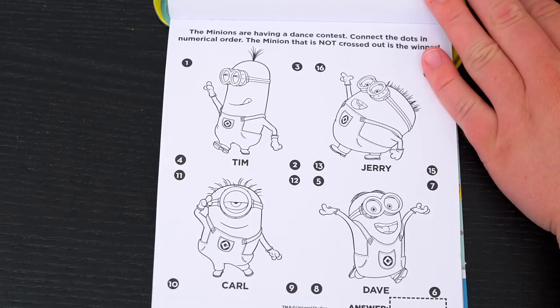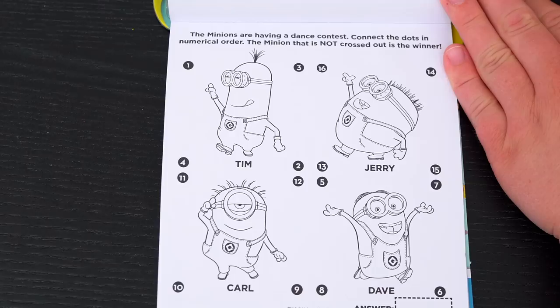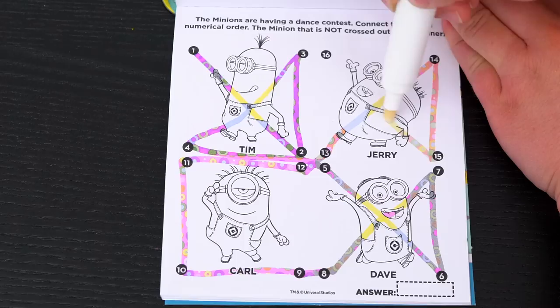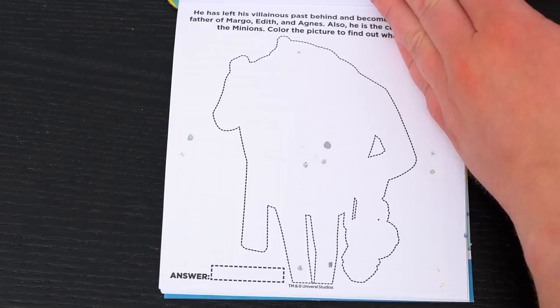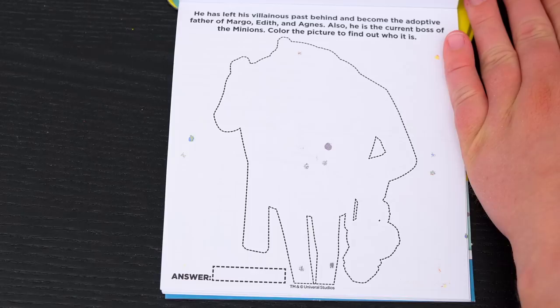The Minions are having a dance contest! Connect the dots in numerical order! The Minion that is not crossed out is the winner! Okay, so the only one not crossed out is Carl! Yay! He wins the dance contest!